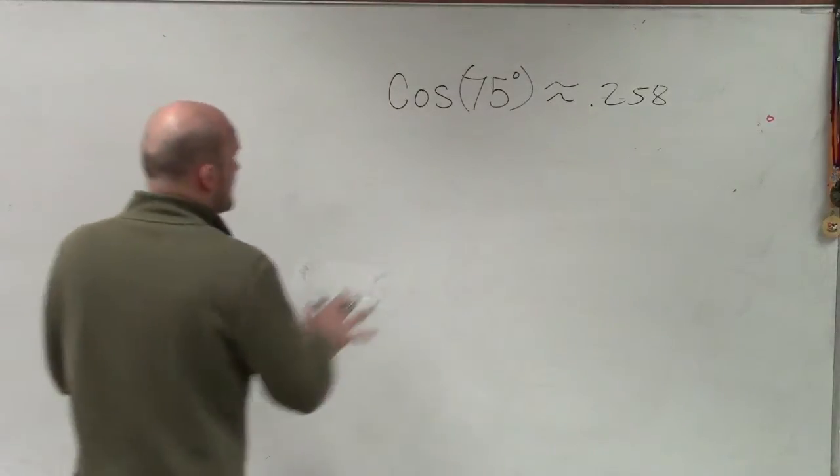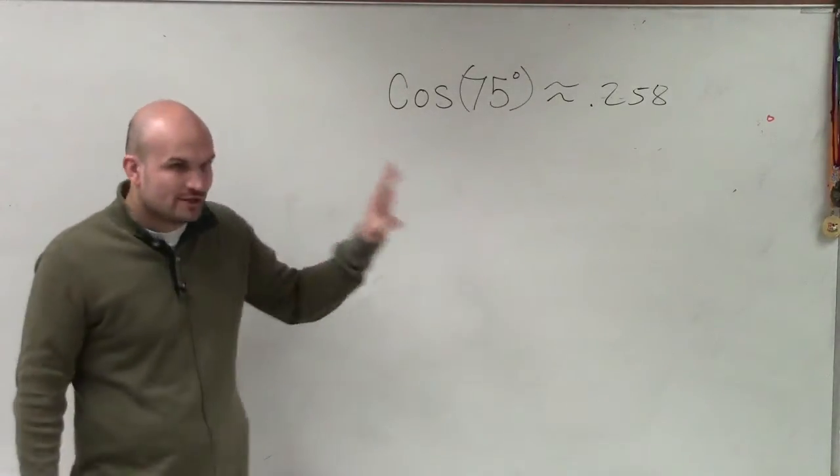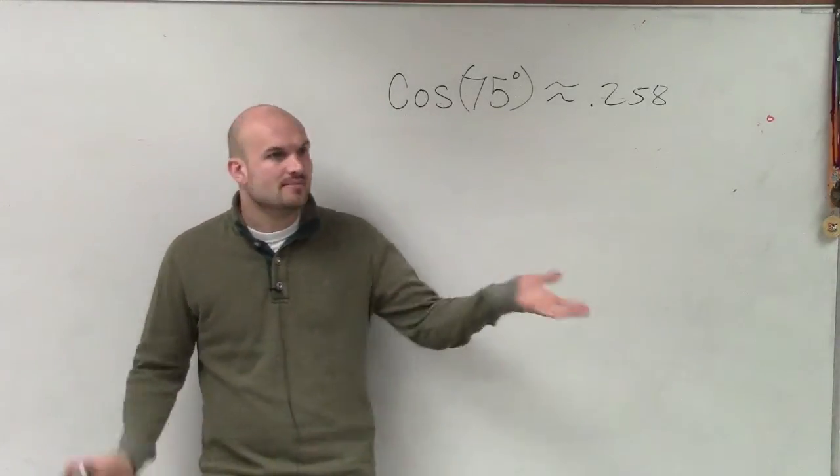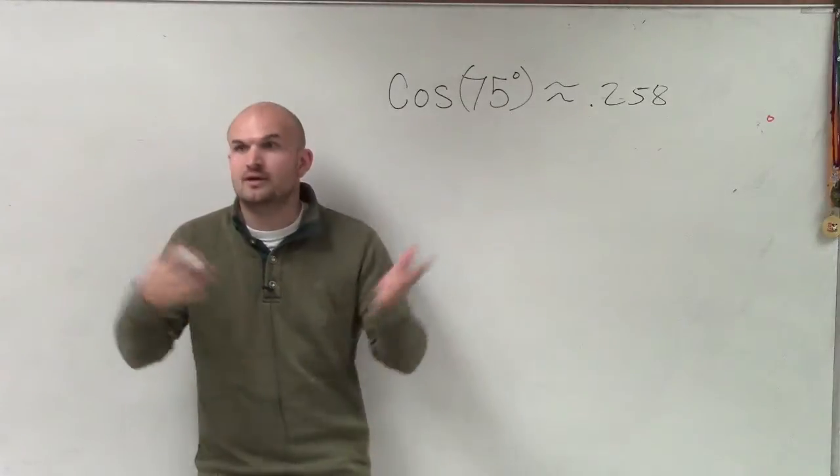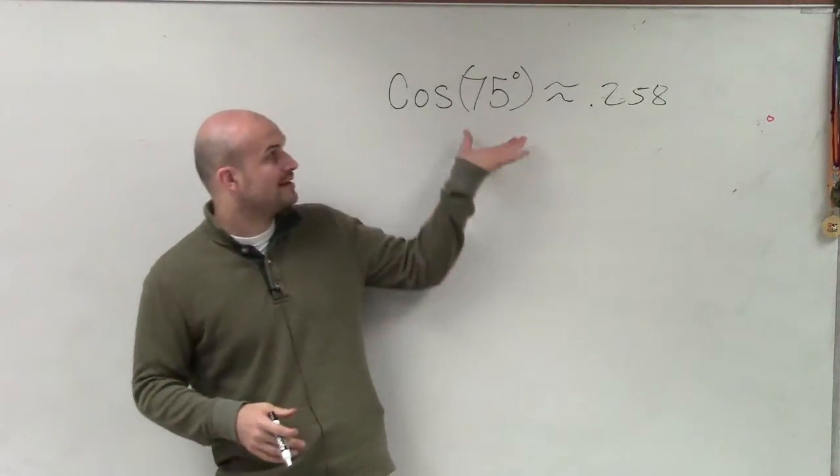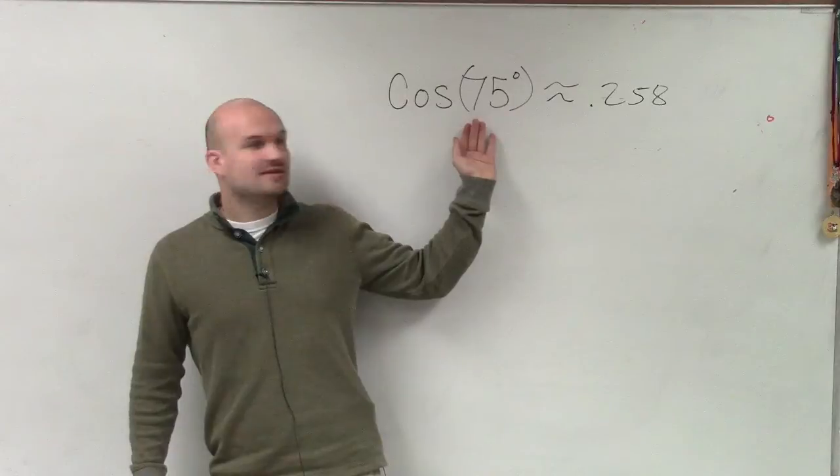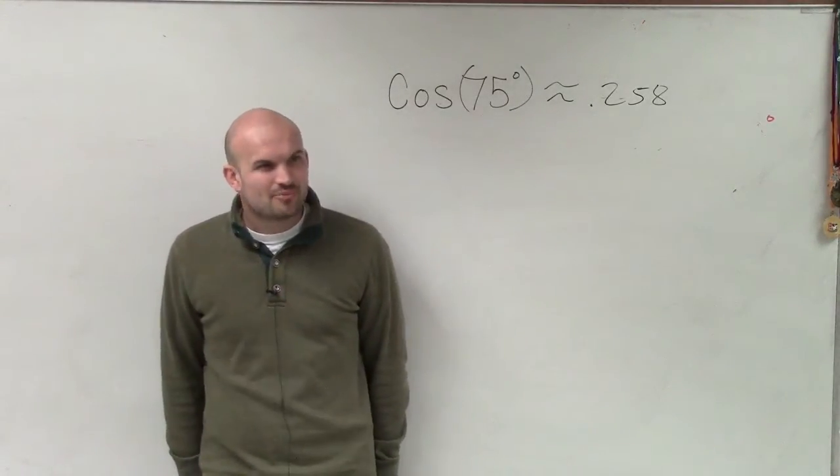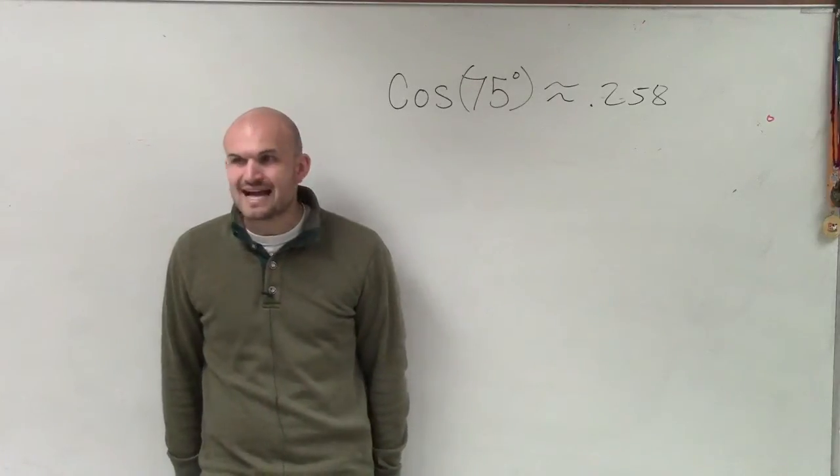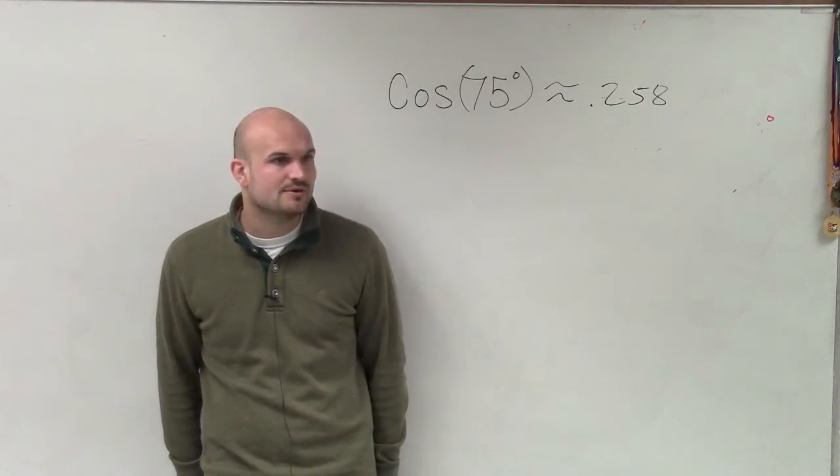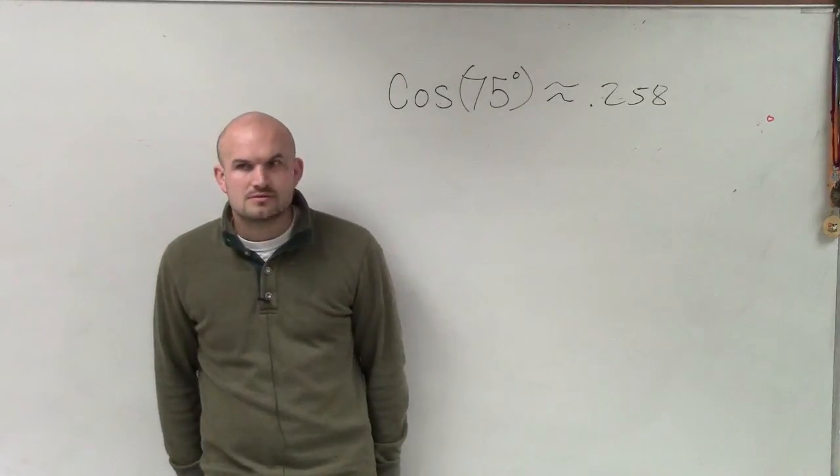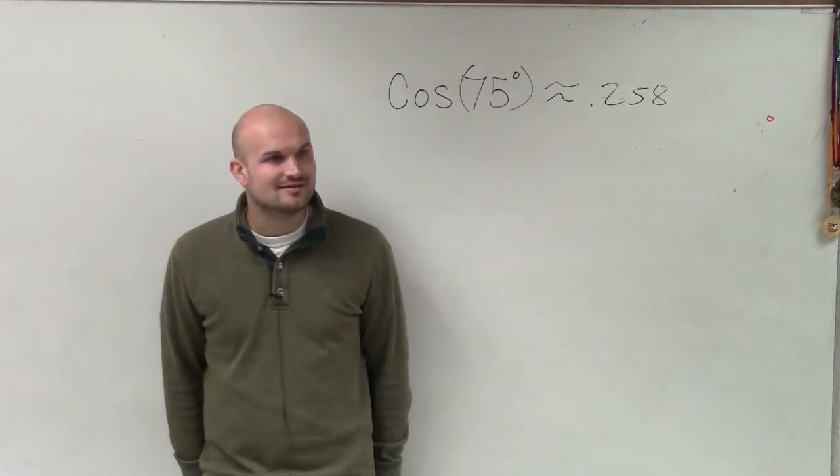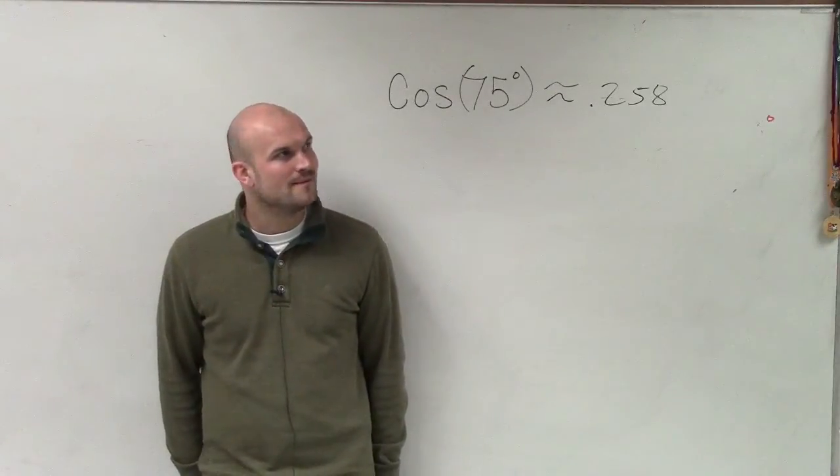Now, why can't we find what we know right now? What is going to be a problem with finding the cosine of 75 degrees? Think about what angles we've been evaluating for in degrees. Why is there an issue with evaluating for the cosine of 75 degrees? Chris, you want to give a shot? What's the problem with evaluating cosine for the exact value? We've done it with other angles. Why can't we do it for 75?